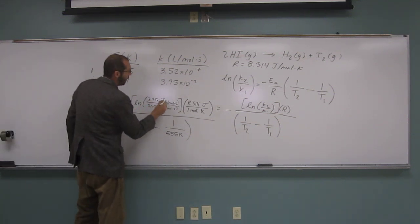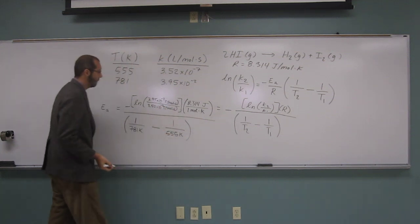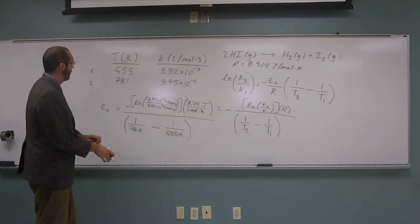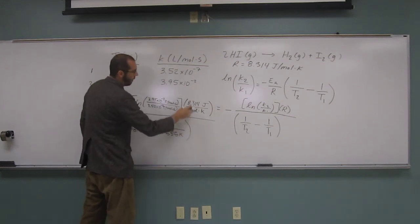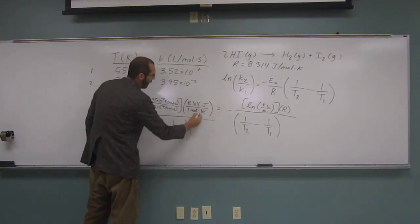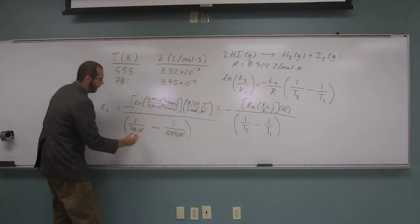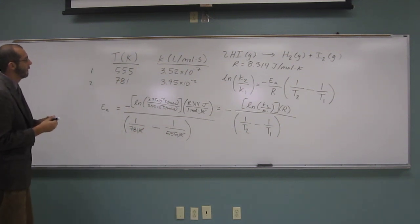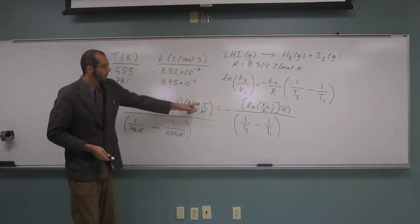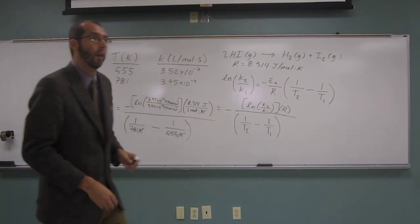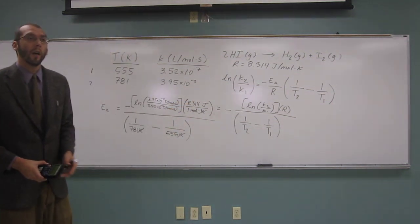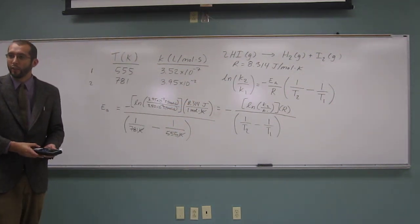So notice, like I said, the K's have to be in the same units and most of the time they are. So 1 over Kelvin divided by 1 over Kelvin is going to cancel those Kelvins out. And joules per mole is a good energy unit. Does anybody have any problems up to this point? No. Okay.